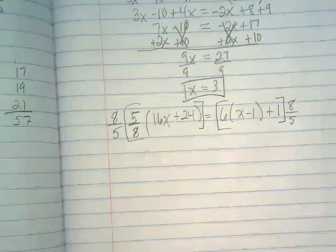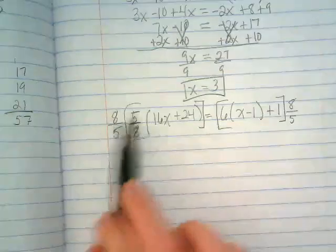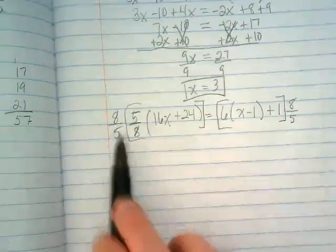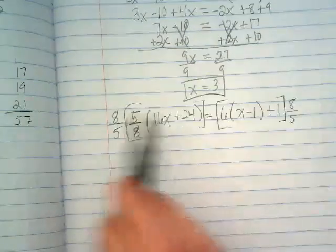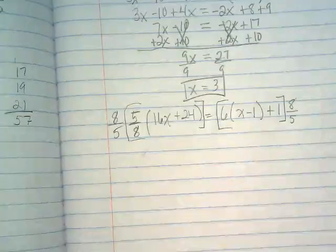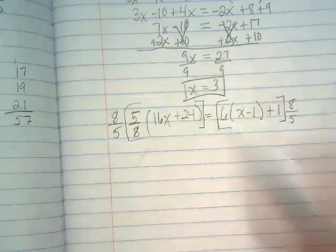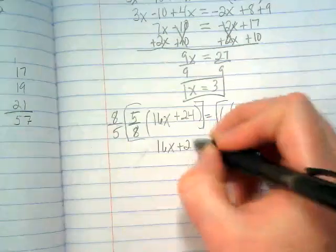So I'm going to multiply the left side by 8 over 5. But that means I also have to multiply the right side by 8 over 5. And I'm going to show you guys something really quickly. The left side, these two things are just going to become a 1, right? Because 8 times 5 and 5 times 8 are going to become 40 over 40, which is 1.